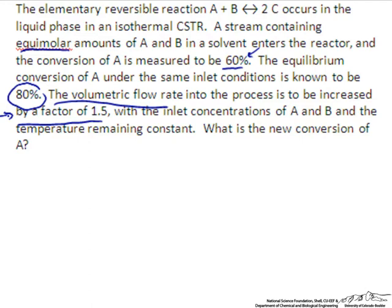The first thing we notice is that this is a reversible reaction. We are achieving a conversion of 60%, which is approaching the equilibrium conversion, so we should consider this an equilibrium reaction, which means we need to solve for an equilibrium constant.